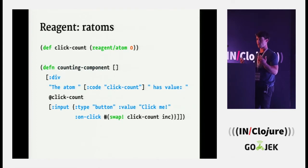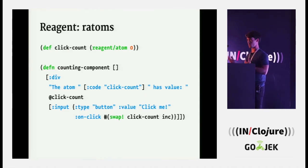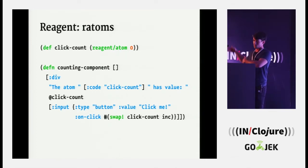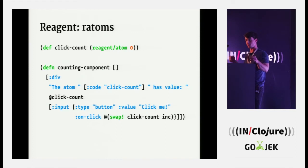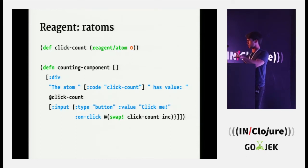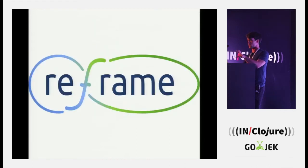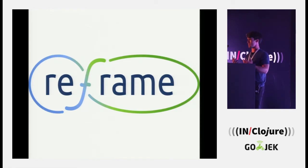The second thing is the ratom, the Reagent atom. It's just like an atom — you swap into it, you reset things — except when you dereference it in your component, that's letting the component know: when this thing changes, recalculate what needs to be viewed. Reagent gives you these things, and this is really all you need to build an interesting application in a web browser. But it doesn't tell you how to architect your system or how many ratoms you should have — where do you keep the state. So Re-frame does that.